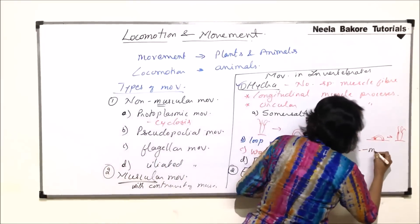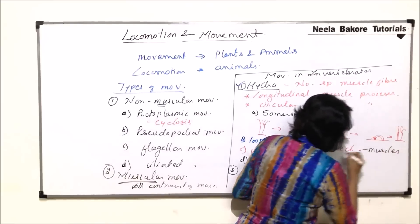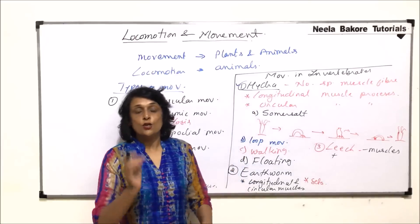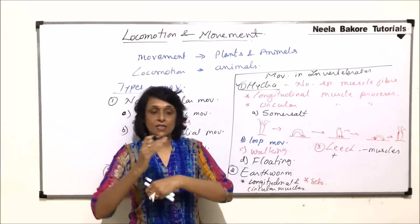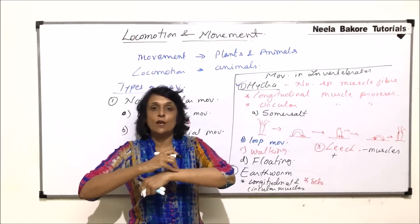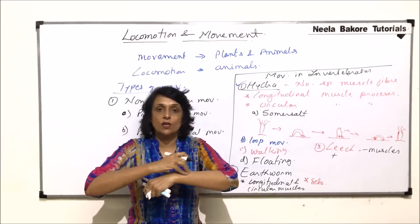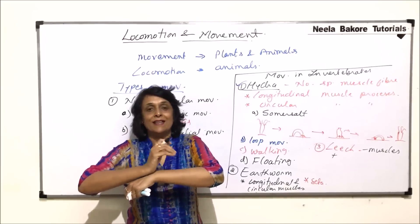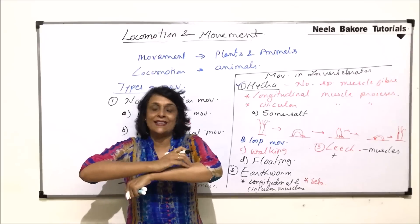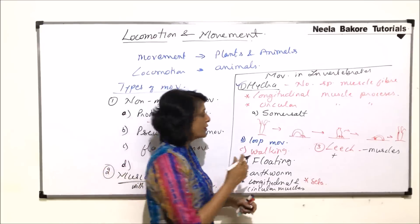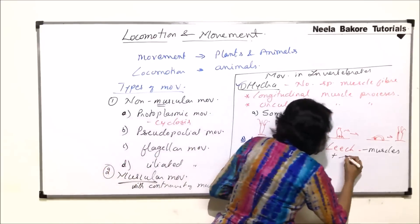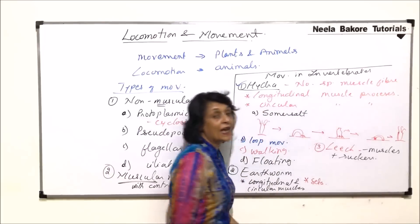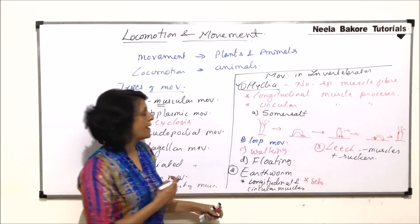The third example is the leech. Leeches also have circular and longitudinal muscles, so muscles help. Plus, they have suckers. A leech attaches to the substratum with its oral sucker, pulls its body forward, detaches, and attaches again — moving in this way. So suckers also help the leech in movement and locomotion.